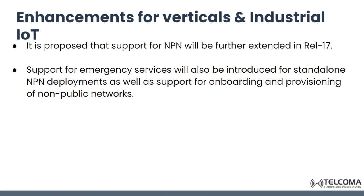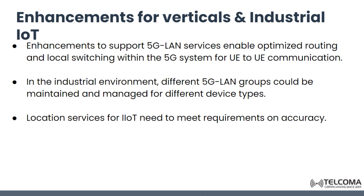It is proposed that support for NPN will be further extended in Release 17, and support for emergency services will also be introduced for standalone NPN deployment, as well as support for onboarding and provisioning of non-public networks. Enhancements to support 5G LAN services enable optimized routing and local switching within the 5G system for user equipment to user equipment communication in industrial environments, where different 5G LAN groups can be maintained and managed for different device types. Location services for IIoT need to meet requirements on accuracy.